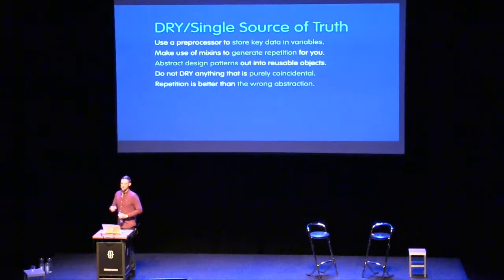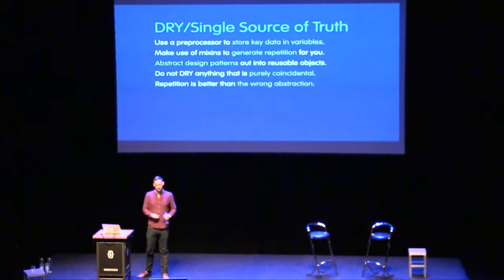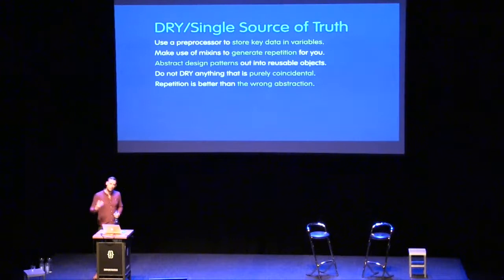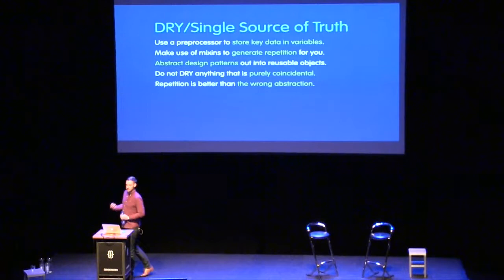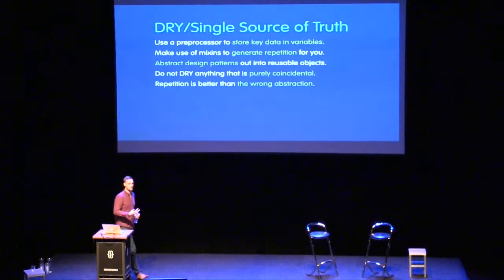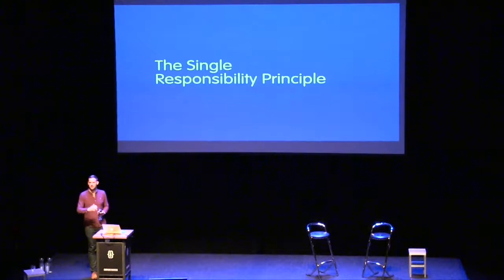To wrap up DRY: use a preprocessor to store key data in variables. Make use of mixins to generate repetition. Abstract out design patterns — object-oriented CSS or componentized modular CSS — to avoid repetition. Don't DRY anything if it was repeated entirely coincidentally. There's a nice saying in computer science: repetition is better than the wrong abstraction. I'd rather change a value four times than pick apart a 500-line mixin that's over-engineered. Always err on the side of simplicity.